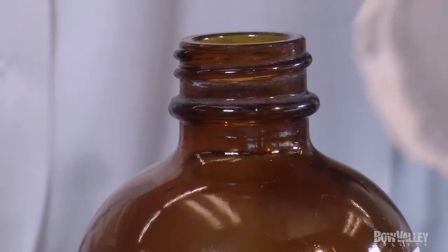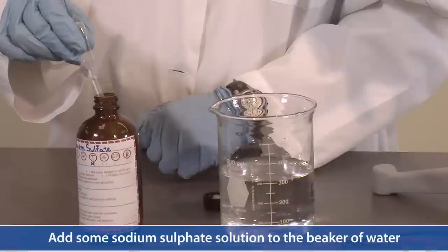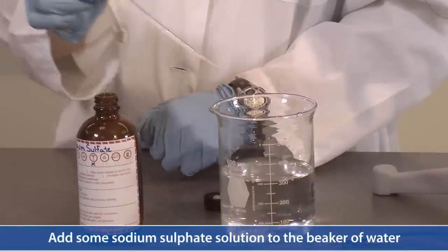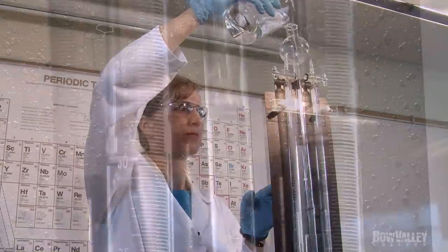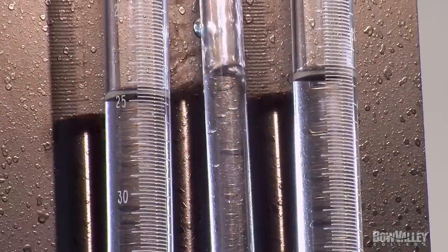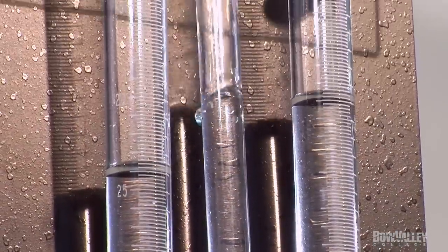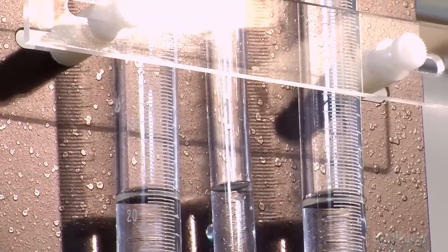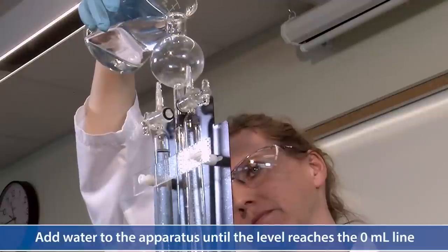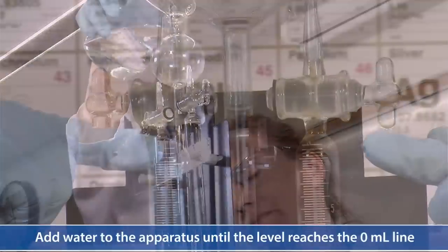To start, we will add some sodium sulfate solution to the beaker of water. Then we will add the water to the apparatus until the level reaches the zero milliliter line.